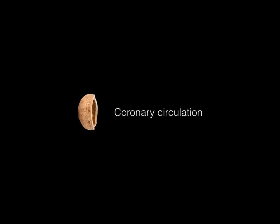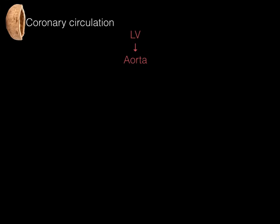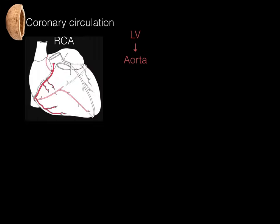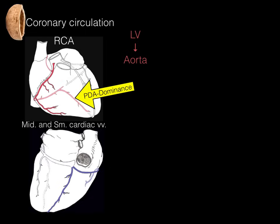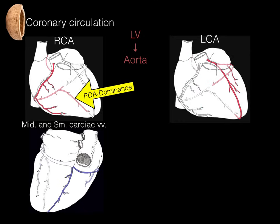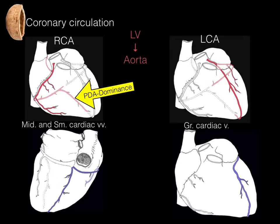Coronary circulation in a nutshell: oxygenated blood in the left ventricle goes into the aorta, out to the right coronary artery supplying the right side of the heart, with the PDA determining coronary dominance. Deoxygenated blood from the right side returns to the coronary sinus via the middle and small cardiac veins. The left coronary artery supplies the left side of the heart, and the great cardiac vein — paralleling the LAD — brings deoxygenated blood back to the coronary sinus and then to the right atrium. That's how blood gets from the heart to the heart back to the heart — coronary circulation in a nutshell.